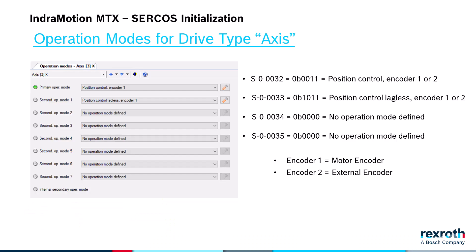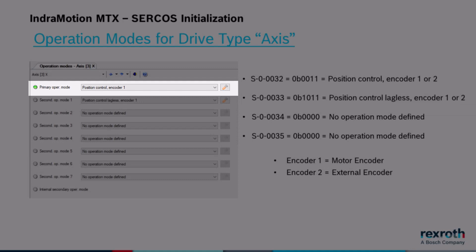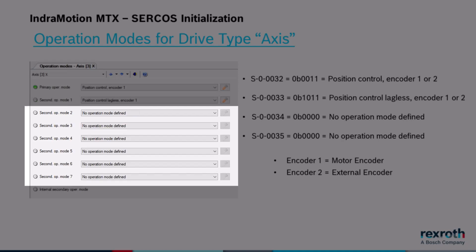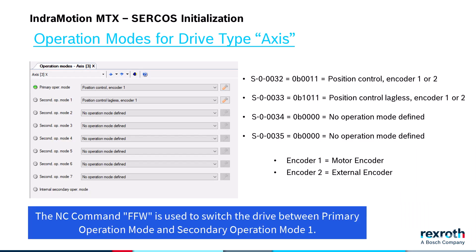The operation modes in the drive depend on the drive type. For the drive type axis, the control will automatically generate these values. For the primary operation mode parameter S32, it sets position control, encoder 1 or 2. For the secondary operation mode 1 parameter S33, it sets position control, lagless, encoder 1 or 2. It sets the remaining secondary operation mode parameters to no operation mode defined. Encoder 1 refers to the motor encoder; encoder 2 refers to the external encoder. The encoder is selected by the machine parameter for encoder selection. The NC command FFW is used to switch the drive between the primary and secondary operation mode 1.